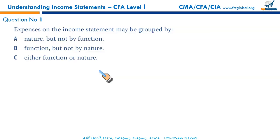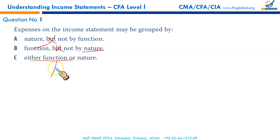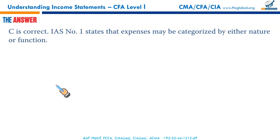Understanding Income Statements EOC question. The first question: expenses on an income statement may be grouped by nature but not by function — wrong. By function but not by nature — wrong again. Either by function, such as selling and administrative expenses and cost of goods sold, or by nature. IAS 1 states that expenses may be categorized either by nature or by function, so that makes C the correct option.